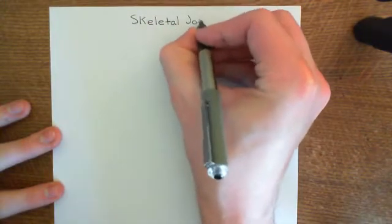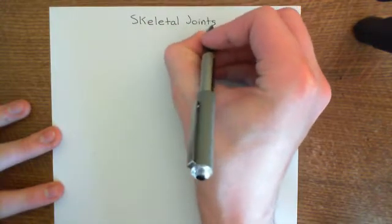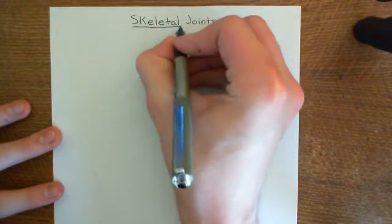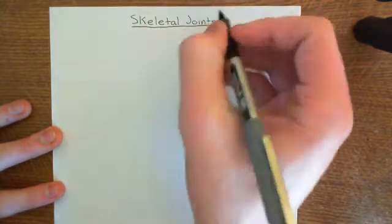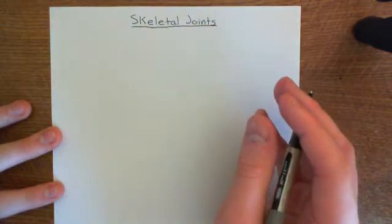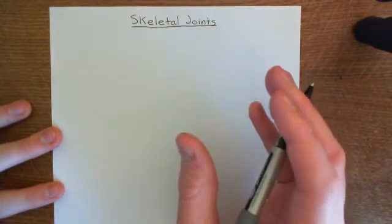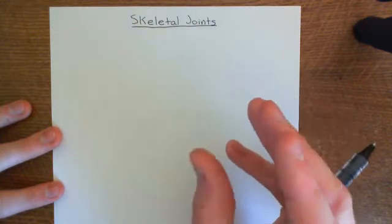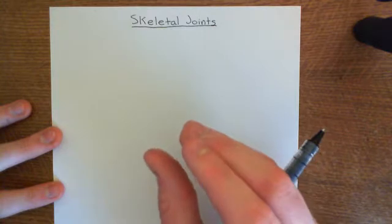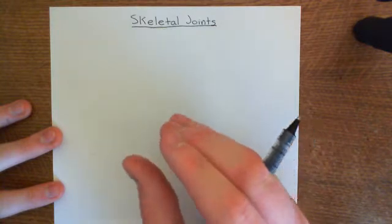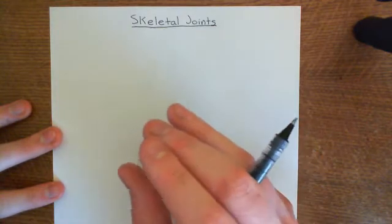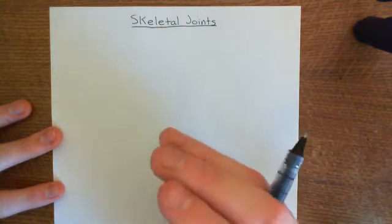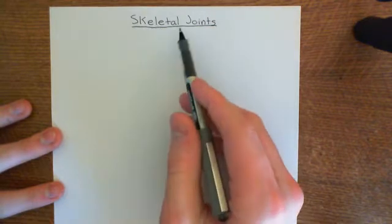Rheumatoid Arthritis is going to be completely about one of the types of skeletal joints and not really about the other. So, what is a skeletal joint? Quite simply, a skeletal joint is where two or potentially more bones are meeting together and joining, and there's something that has to hold the two of them together.